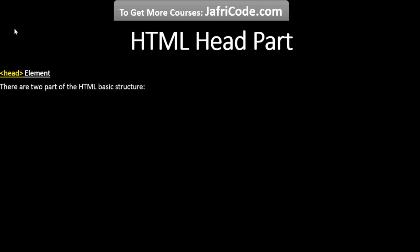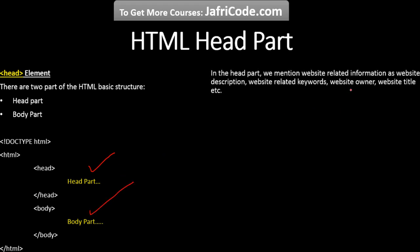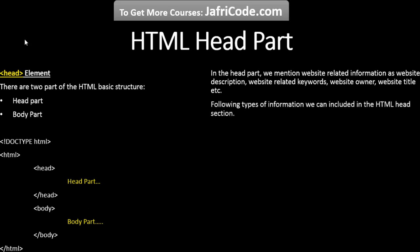There are two parts of HTML basic structure: one is the head part and the other is the body part. In the head part we mention website-related information such as website description, related keywords, website owner, and other website metadata. We can also include information related to search engines. The following types of information can be included in the HTML head section.